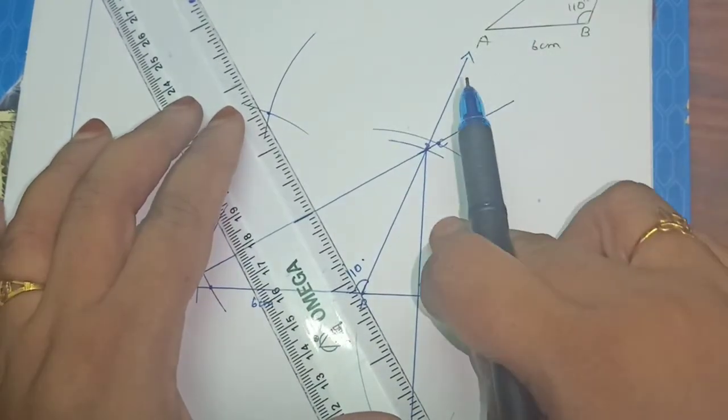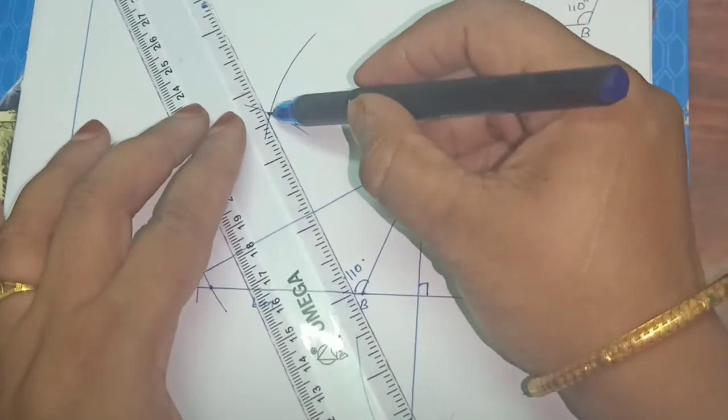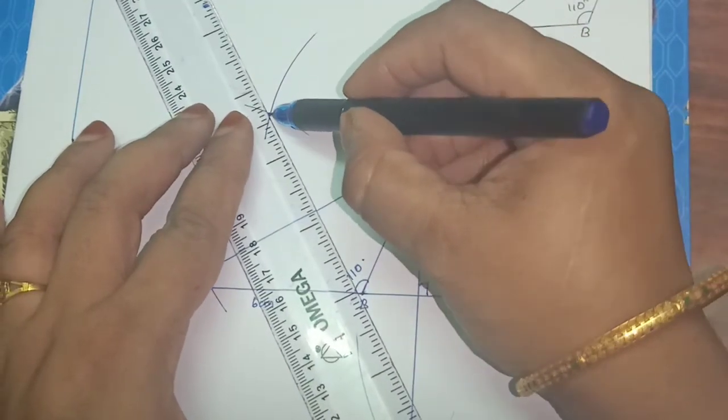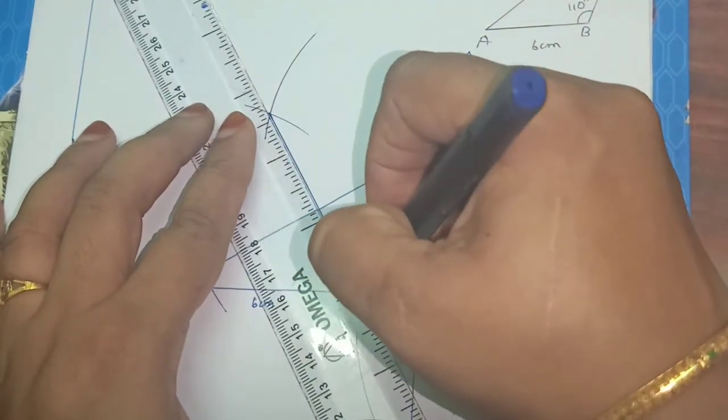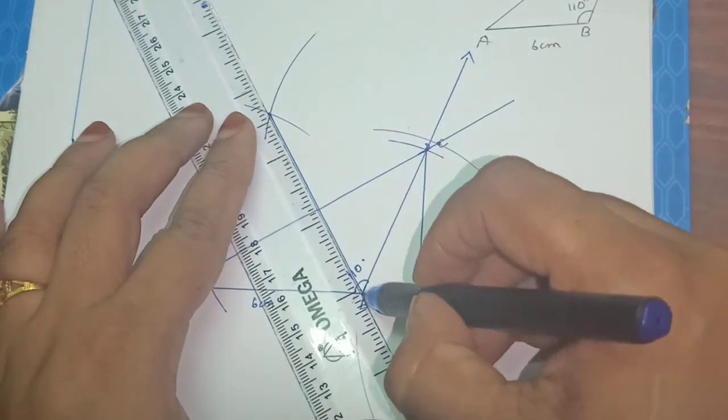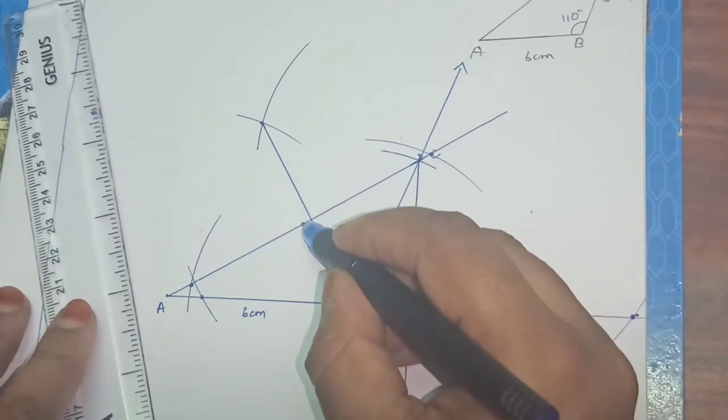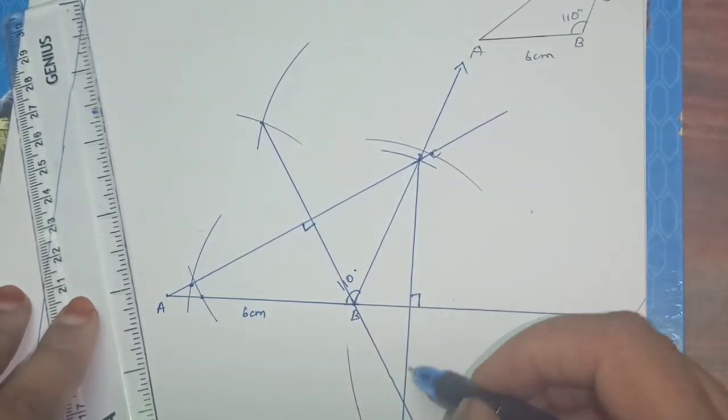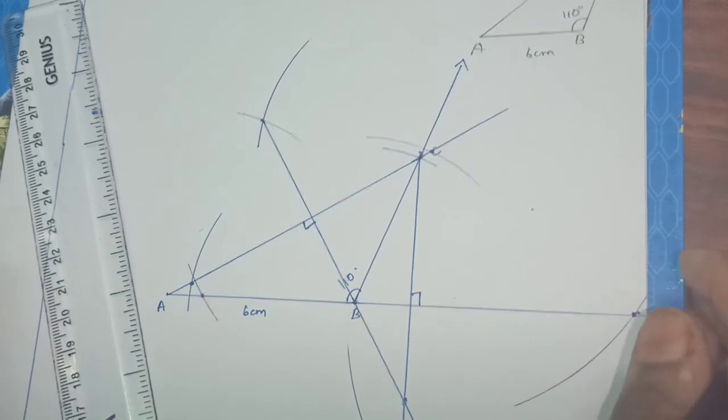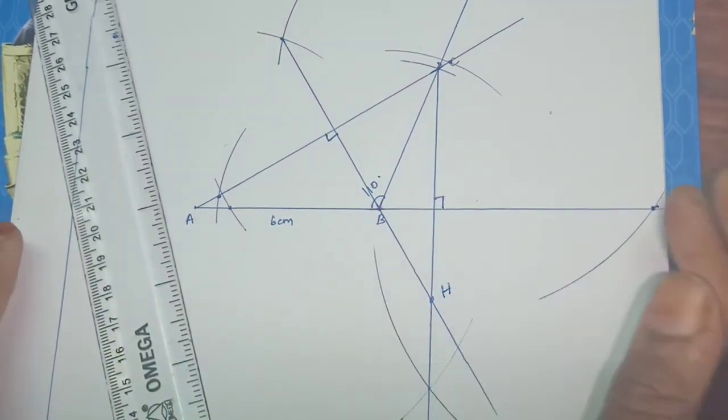But don't worry that it is not joining the previous altitude. We have to extend it. Here, extension is very important. So you have to join with B. It is not meeting, you can clearly see, but you can extend it where it is meeting. Here it is meeting. So this is the second altitude. Second altitude where it is meeting both altitudes. So this will be our orthocenter.